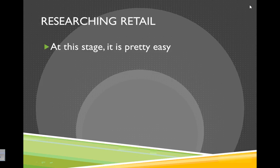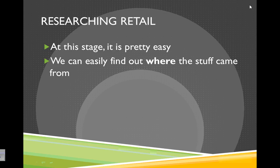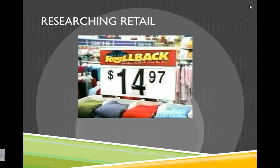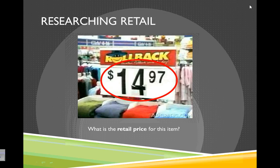So researching retail at this stage is pretty easy. A lot of the information is very easy to find. We can easily find out where the stuff came from, because you can figure out which store it was bought in. And we can easily figure out the retail price, because that information is widely available. For example, what's the retail price for this item? Very easy — the information is on display. It's $14.97. And you can tell by some of the logos that this was at Walmart. So it's easy to see the place it came from — Walmart — and the retail price that the general public pays, which is $14.97.